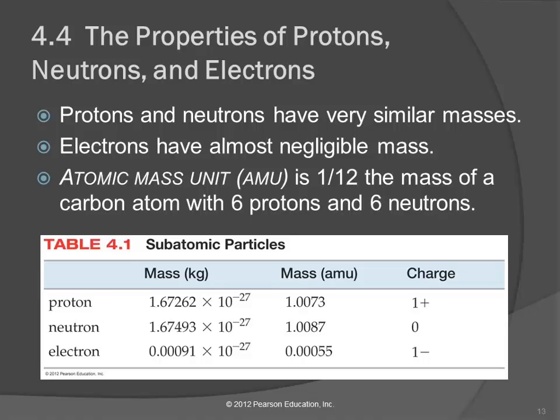And the definition of it is kind of crazy sounding. It's one-twelfth the mass of a carbon atom that has 6 protons and 6 neutrons in it. Essentially what that means is the atomic mass unit is very close in size to the mass of one proton or the mass of one neutron.